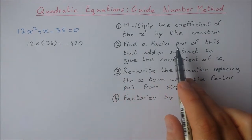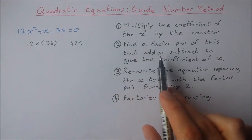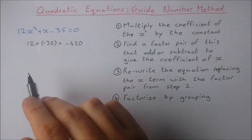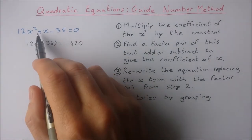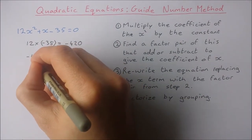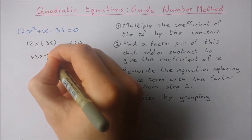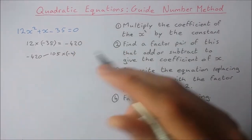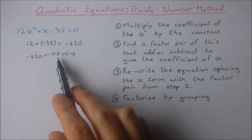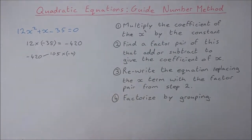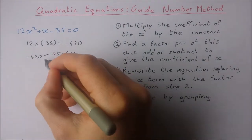Step 2: find a factor pair of this that add or subtract to give the coefficient of x. So I want a factor pair of 420 that add or subtract to give me the coefficient of x, which is actually just 1 in this case. For example, a factor pair of -420 would be 105 times -4, but these are not going to add to give me 1, they're going to add to give me 101. So I need factors that are much closer together.